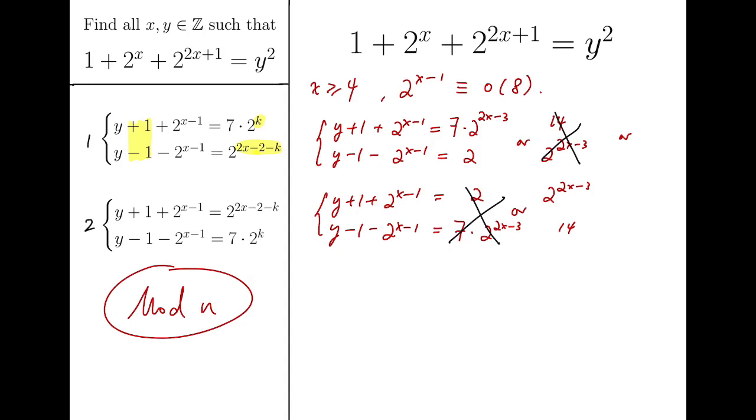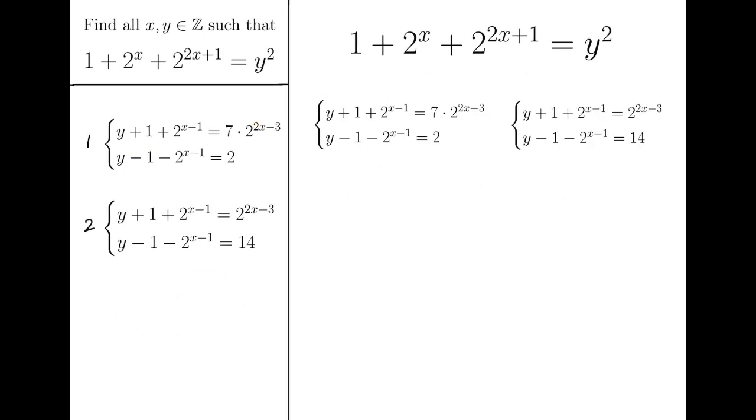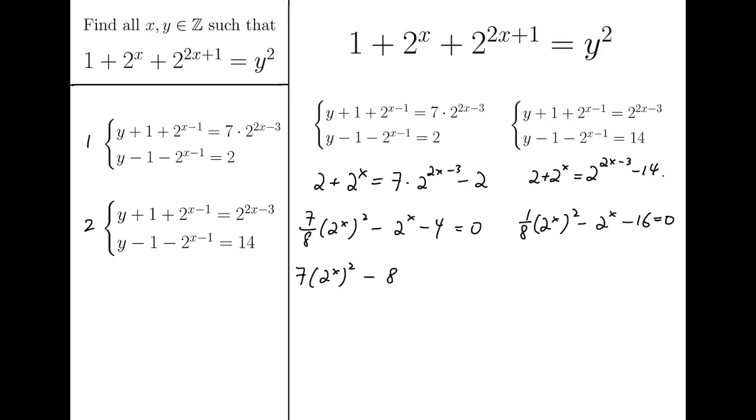Now we can solve them. Subtract the two equations to eliminate y. Then we will have 2 plus 2 to the x equals 7 times 2 to the 2x minus 3 minus 2. While for the other set of equations, we will have 2 plus 2x equals 2 to the 2x minus 3 minus 14 instead. Then we can solve them.